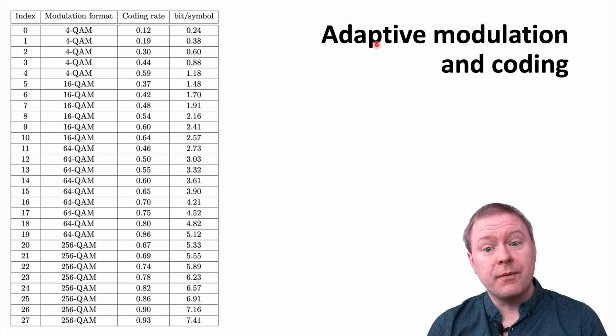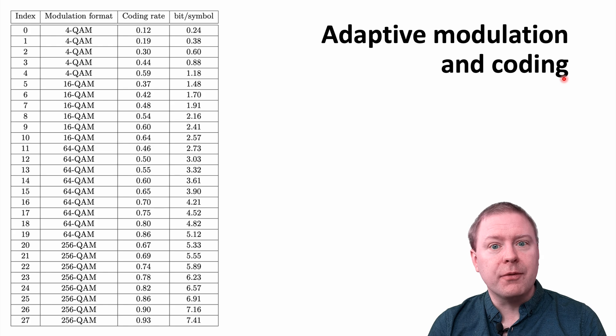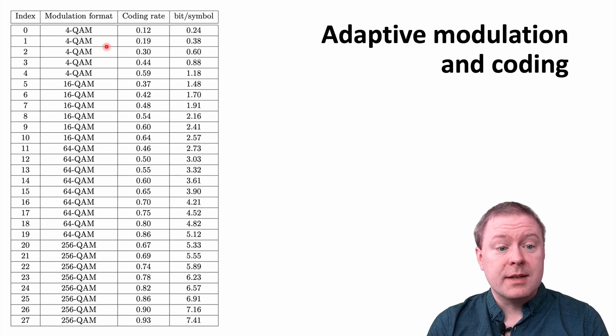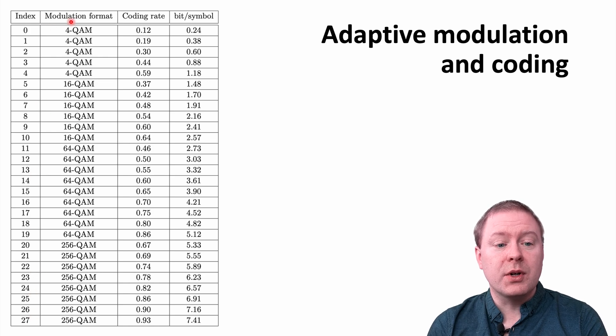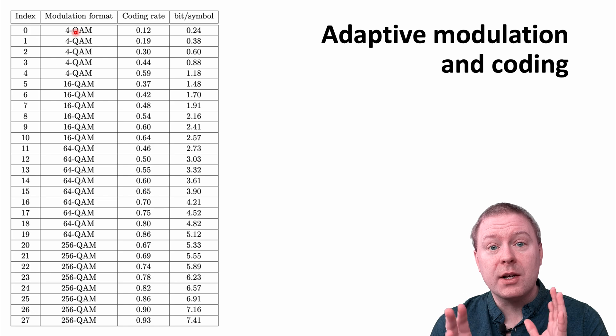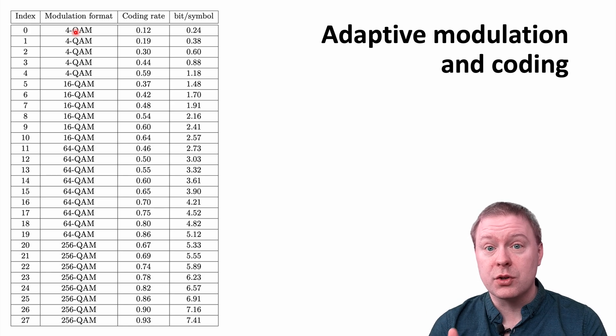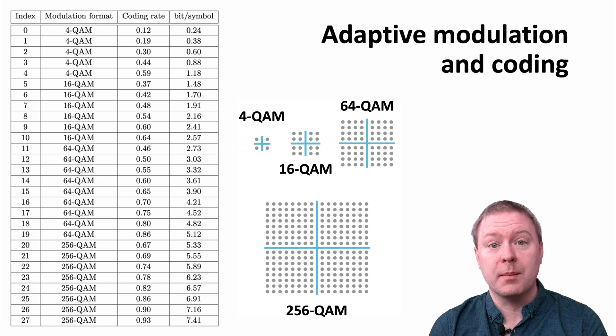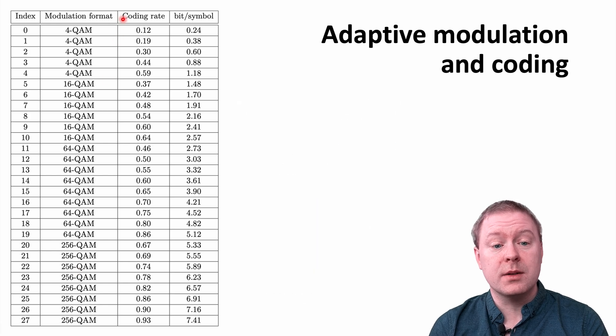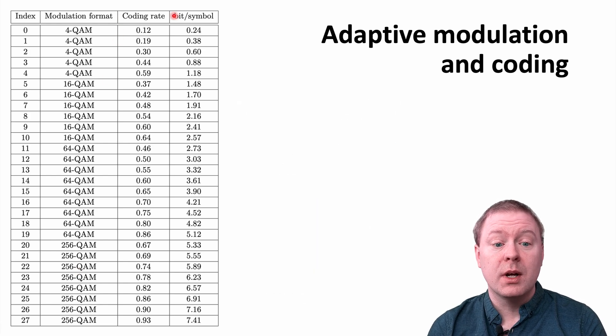In practice we use something called adaptive modulation and coding, which means that we pre-define a particular number of speeds that you can transmit data at. And this is for example this table here from 5G with different modulation formats. So these are how many constellation points you have in your digital modulation. 4-QAM, 16-QAM, 64-QAM and 256-QAM. And then you combine this with for example an LDPC code with different coding rates. And the combination of this leads to different bits per symbol.